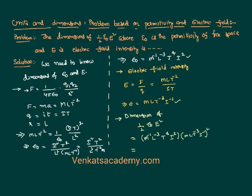Combining the exponents: for M, we have M⁻¹ from epsilon naught and M² from E squared, giving M¹. For L, L⁻³ plus L² gives L⁻¹. For T, T⁴ plus T⁻⁶ gives T⁻². For I, I² plus I⁻² gives I⁰, so the I terms cancel out completely.